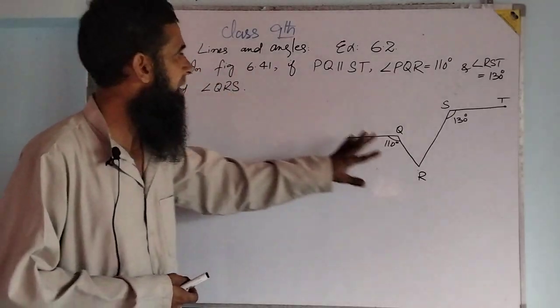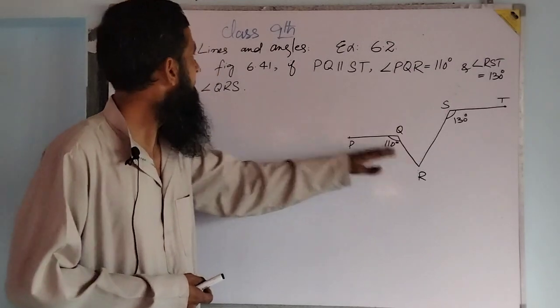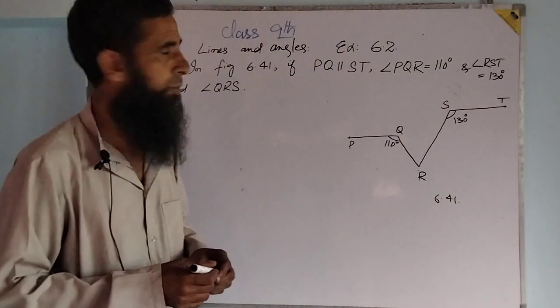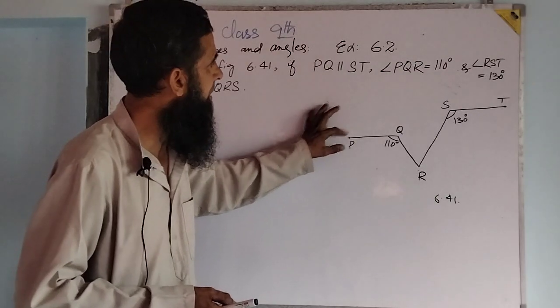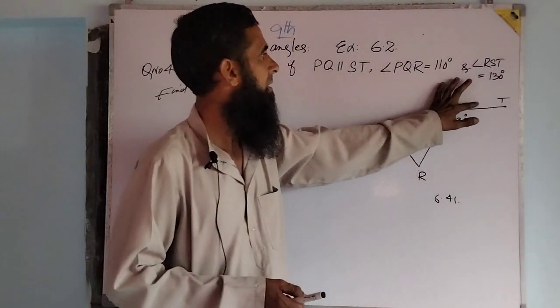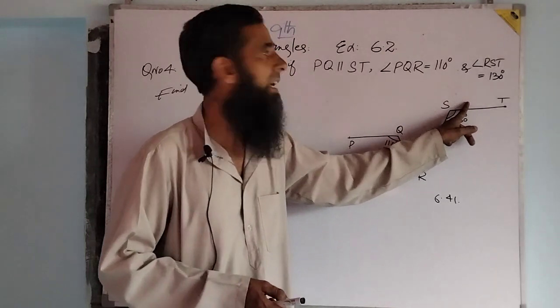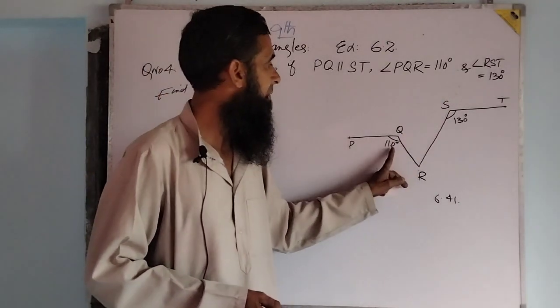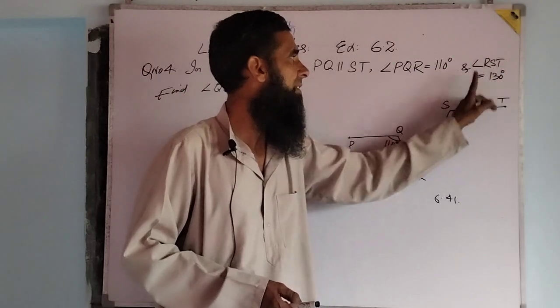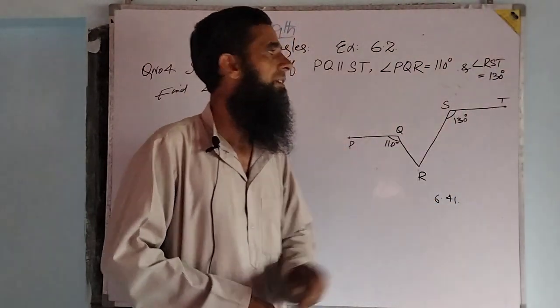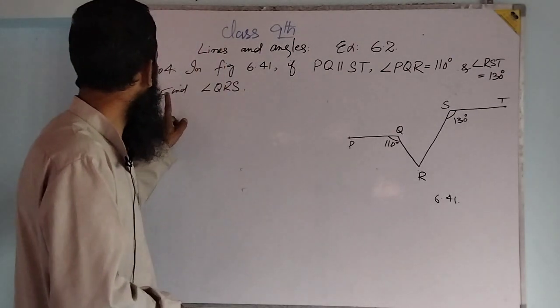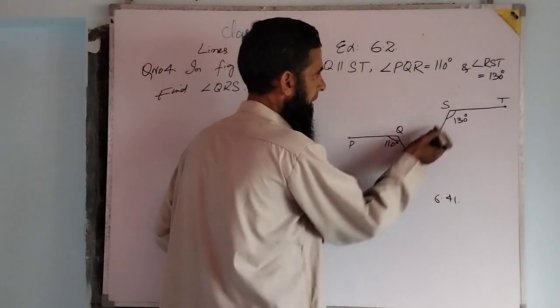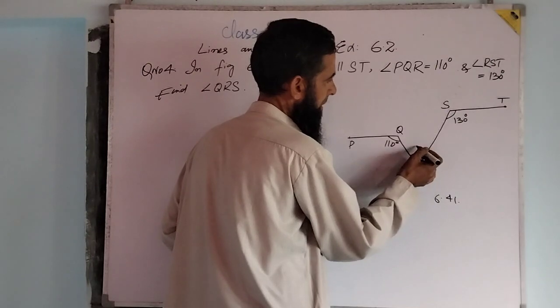The question is here in figure 6.4. We have here if PQ is parallel to ST. PQ and ST are parallel lines. And angle PQR is of measure 110 degrees, and angle RST is of measure 130 degrees. We have to find angle QRS.